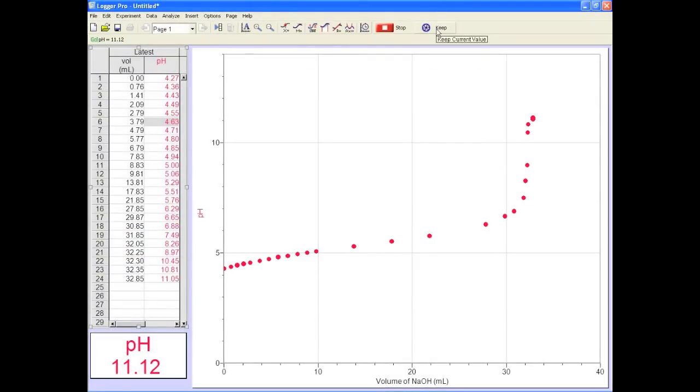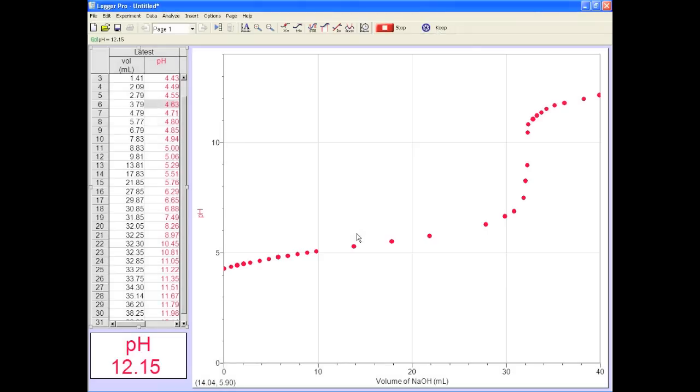Once the pH change slows down again, you can add larger volumes of titrant until it levels off. Get a few more points and press stop. If it looks like what you see here, thumbs up.